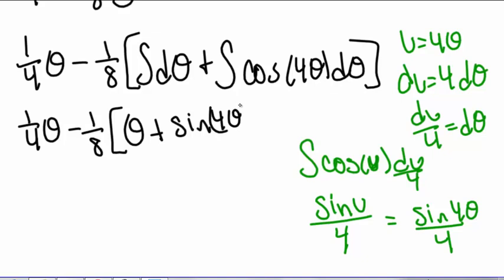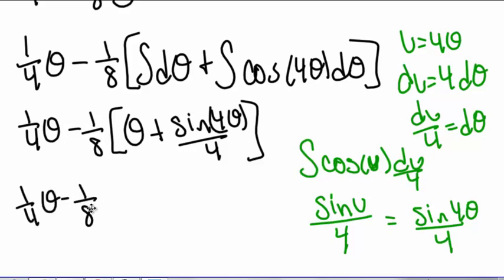Multiplying through by negative one-eighth, we have one-fourth theta minus one-eighth theta minus sine of 4θ divided by 32. And we have to add on the constant C.